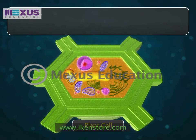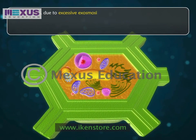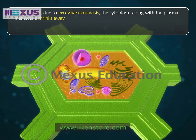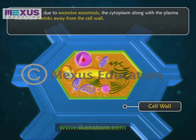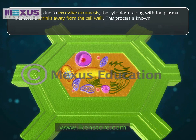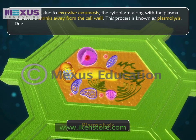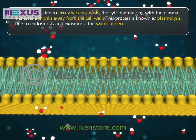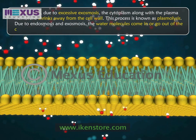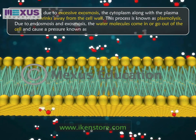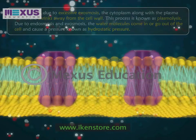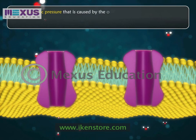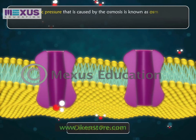In plant cells, due to excessive exosmosis, the cytoplasm along with the plasma membrane shrinks away from the cell wall. This process is known as plasmolysis. Due to endosmosis and exosmosis, water molecules come in or go out of the cell and cause a pressure known as hydrostatic pressure. The hydrostatic pressure caused by osmosis is known as osmotic pressure. The plasma membrane maintains a balance between the osmotic pressure of the intracellular and intercellular fluids.